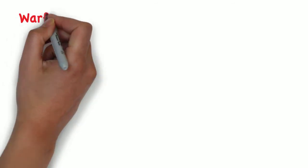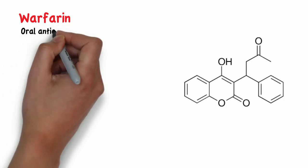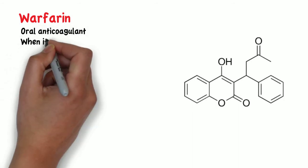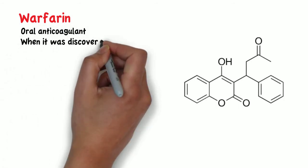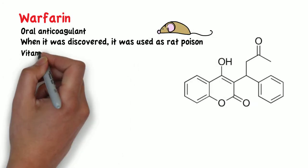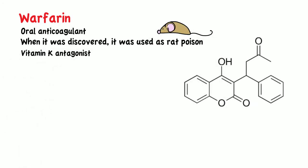The next drug is warfarin. Nowadays warfarin is an oral anticoagulant, but when it was first discovered it was used as rat poison. Warfarin is a vitamin K antagonist.